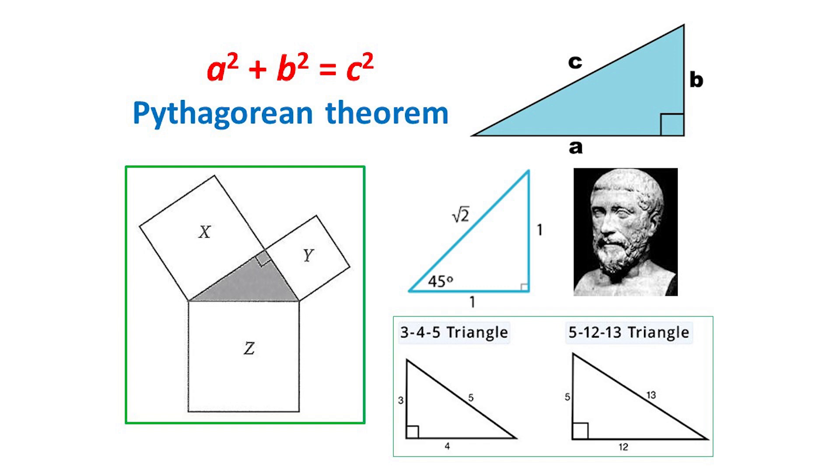As shown here, it tells us that for a right-angle triangle, the area Z of the square on the longest side, the hypotenuse, is the sum of the areas X and Y of the squares on the other two sides. So it's a result from geometry.